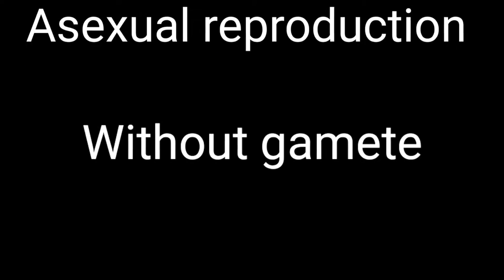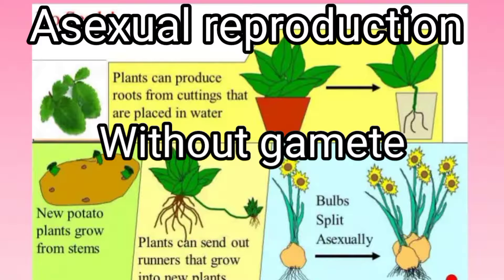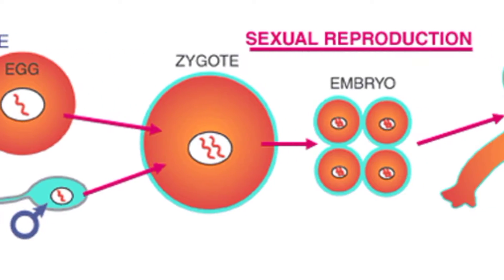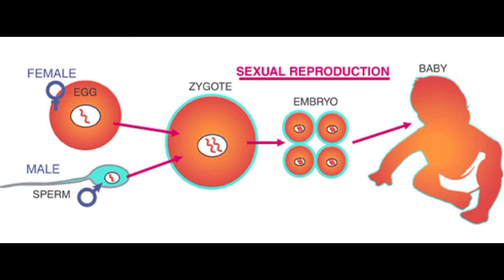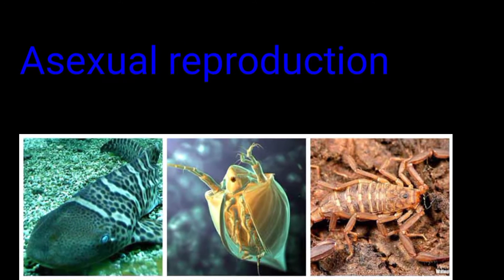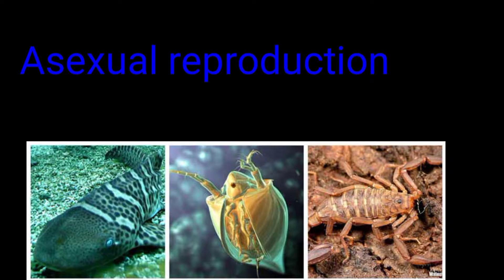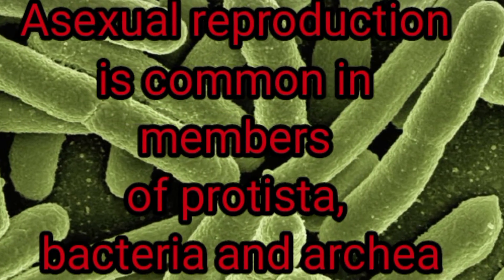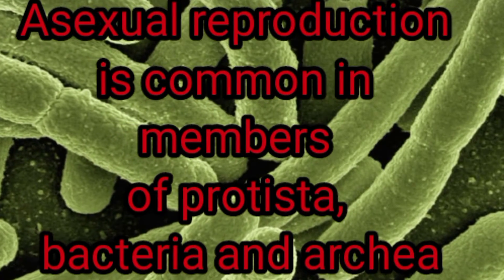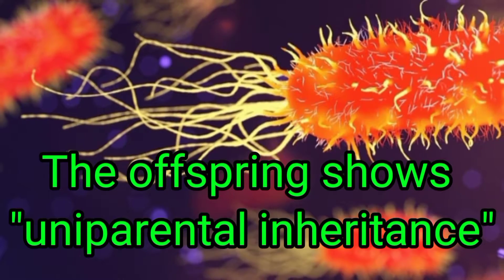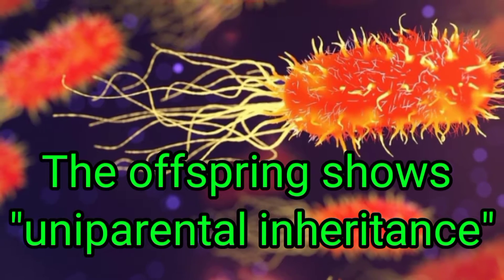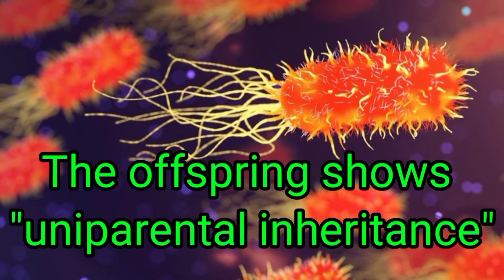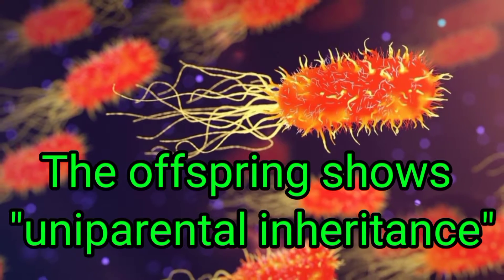Asexual reproduction is done by a single parent without the involvement of gamete formation. Sexual reproduction involves male and female gametes. Asexual reproduction is common in members of Phylum Protista, Bacteria, and Archaea. In asexual reproduction, the offspring show uniparental inheritance, which means the offspring display the parental characters.